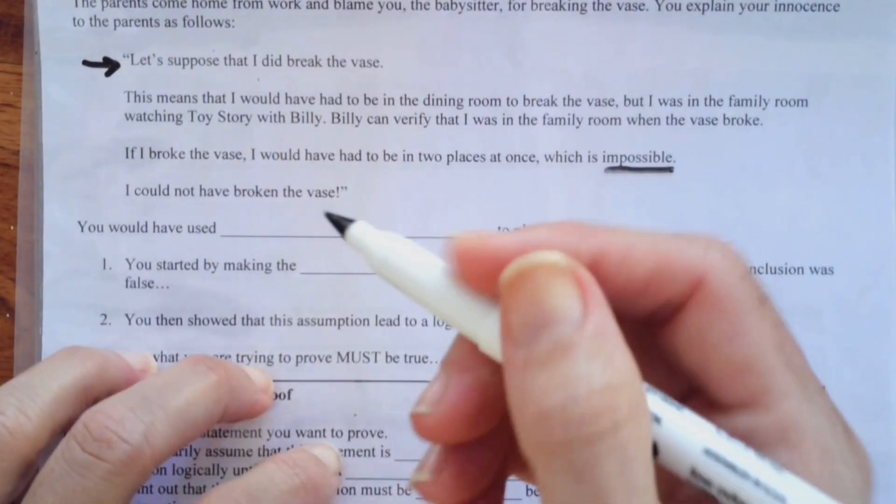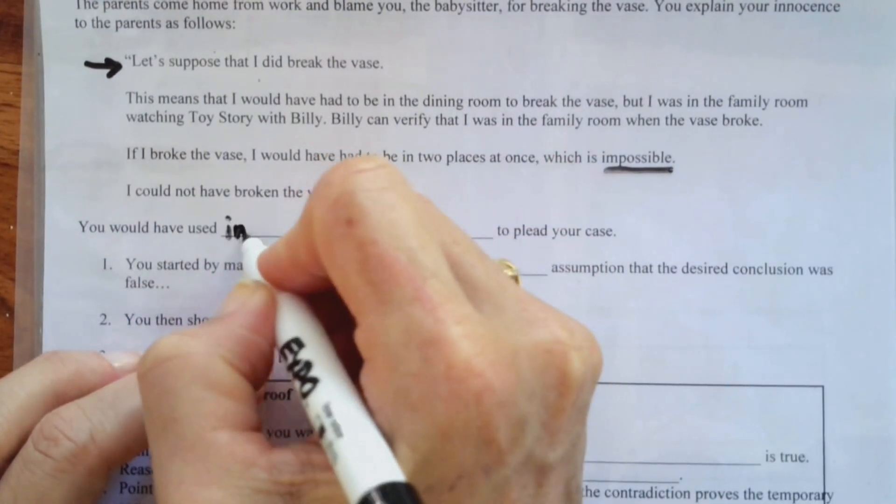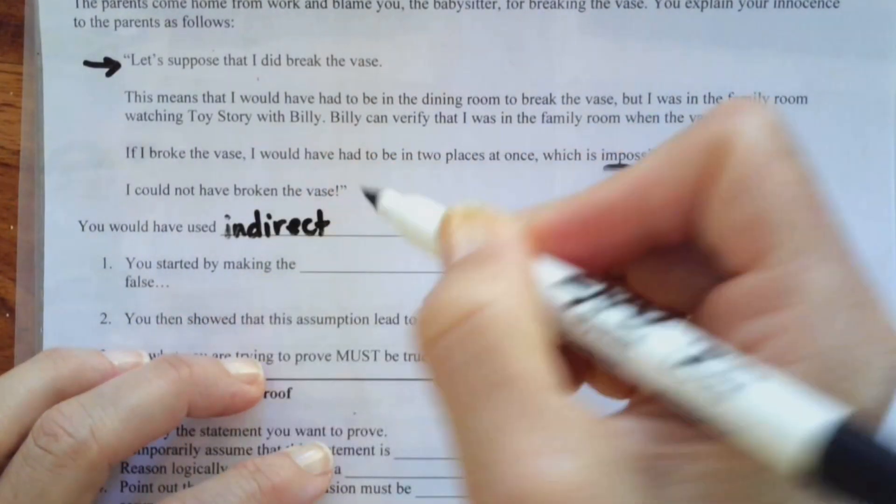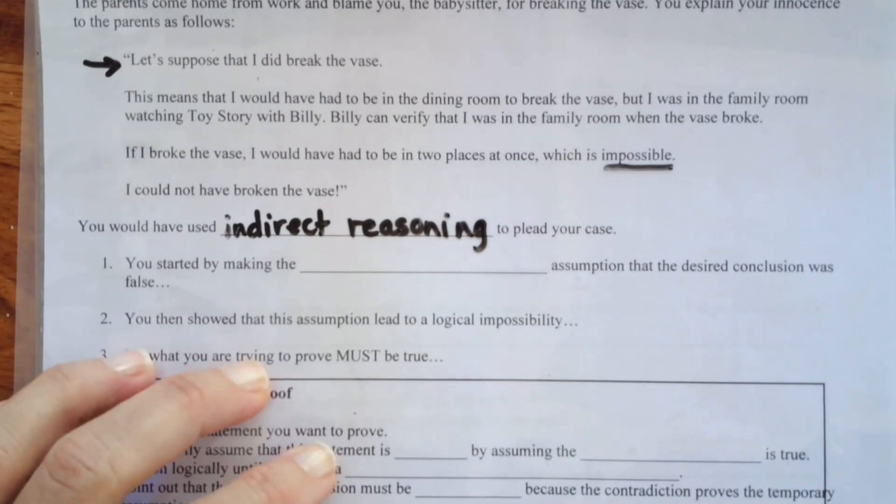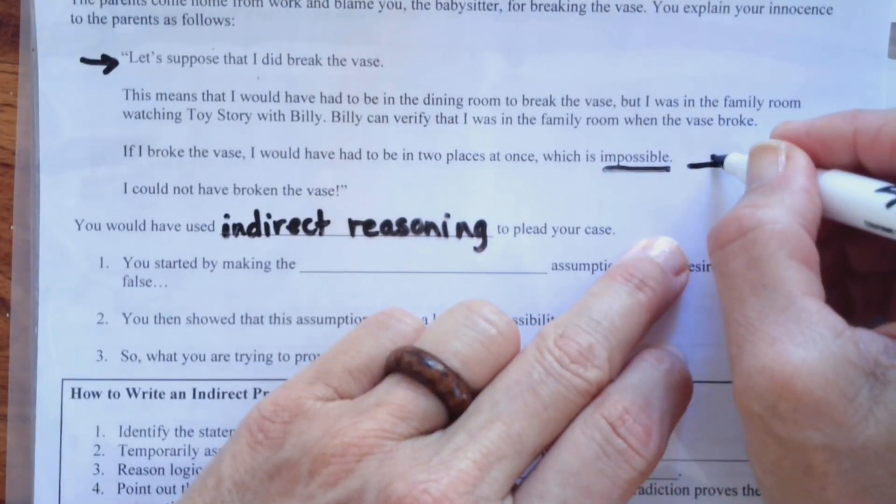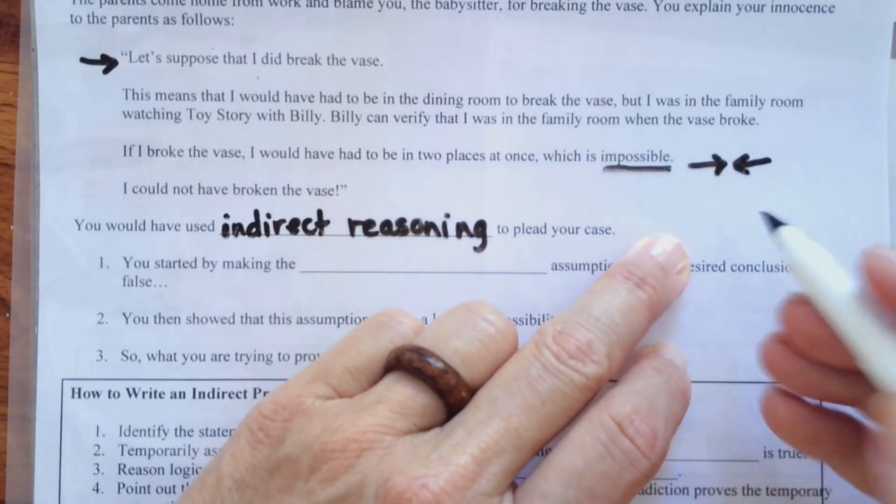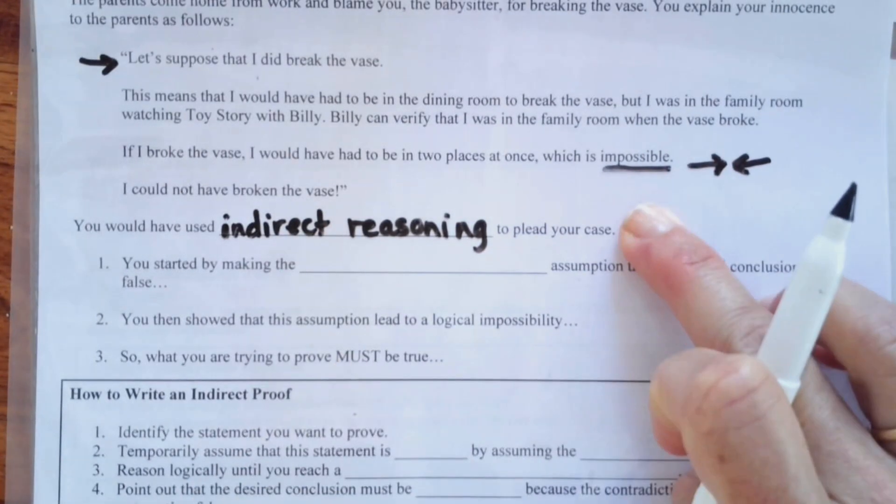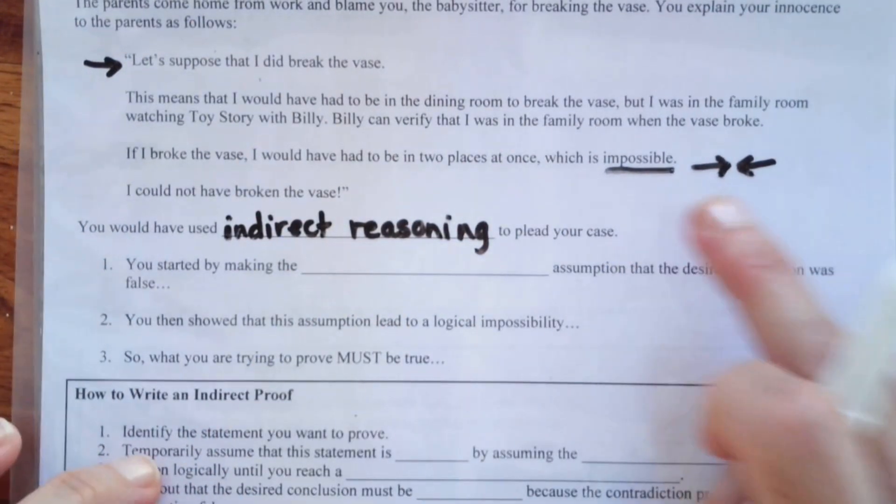Therefore, you would have used what we call indirect reasoning to plead your case. In other words, when we reach something that's impossible, and by the way, we're going to do this little symbol. So, that means contradiction. It means we've reached an impossibility. Therefore, logically speaking, something else has to happen than what we supposed.